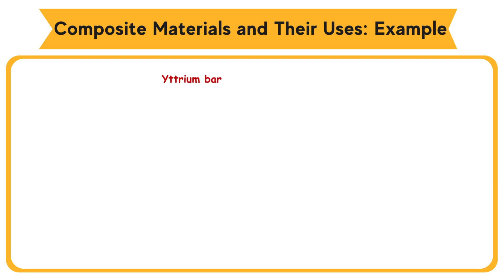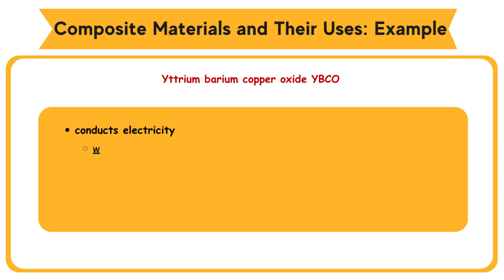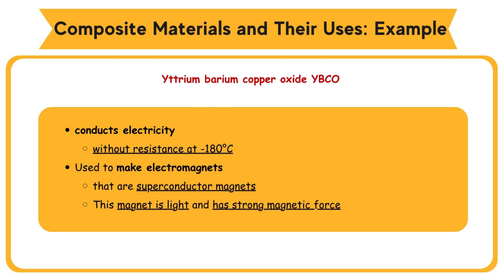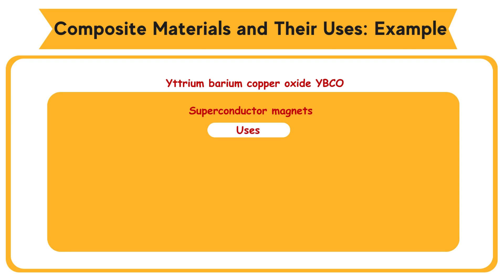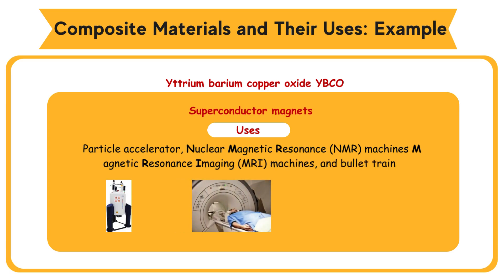Superconductor: yttrium barium copper oxide (YBCO) conducts electricity without resistance at negative 180 degrees Celsius. Used to make electromagnets that are superconductor magnets. This magnet is light and has strong magnetic force. Uses: superconductor magnets are used in particle accelerators, nuclear magnetic resonance (NMR) machines, magnetic resonance imaging (MRI) machines, and bullet trains.